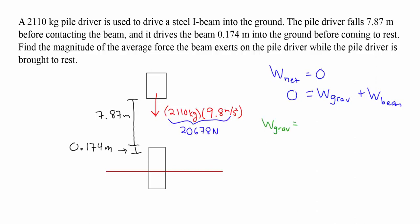The work done by the force of gravity will be the force of gravity times the entire distance that the beam moves. It's not just the 7.87 meters, it moves over the full distance of 7.87 meters plus 0.174 meters, which together is 8.044 meters. So the work done by gravity will be 20,678 Newtons times 8.044 meters. This gives the work done by gravity as positive 166,333.832 joules.